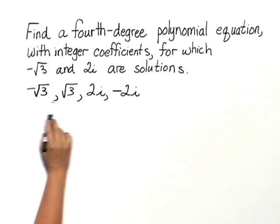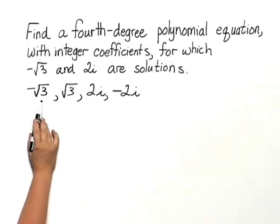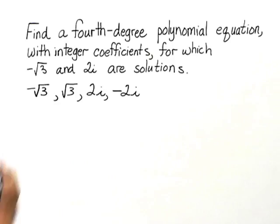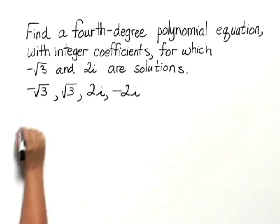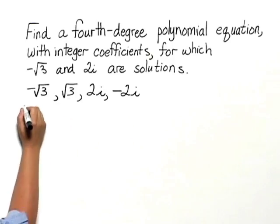So we actually have to have four solutions, which will give us a fourth degree polynomial equation once we multiply it out. Each of these corresponds to a factor.